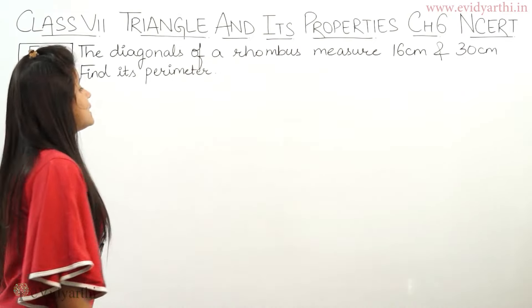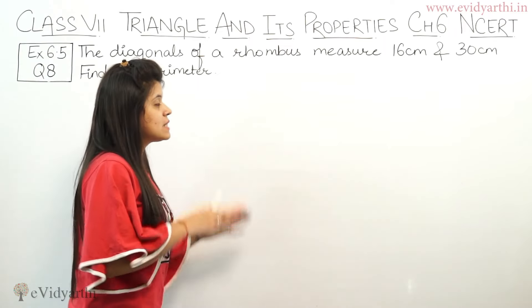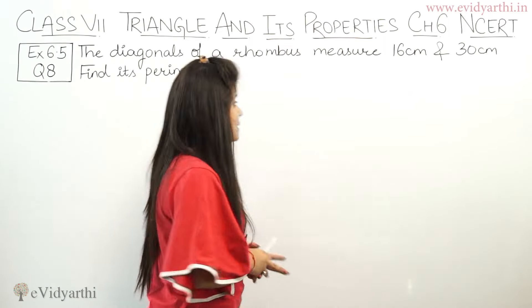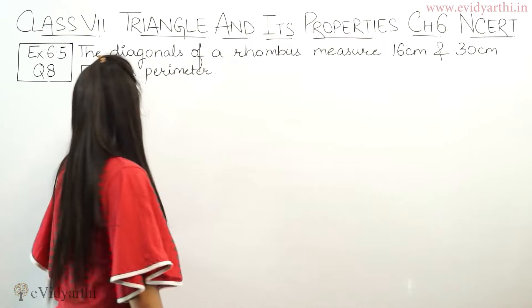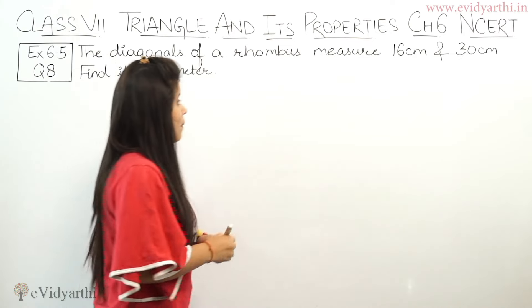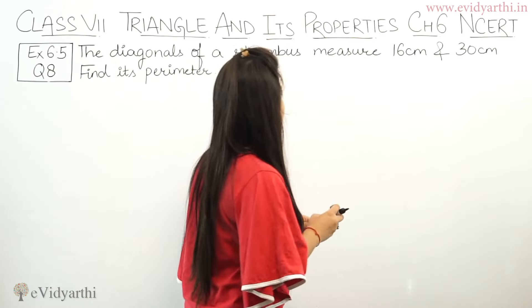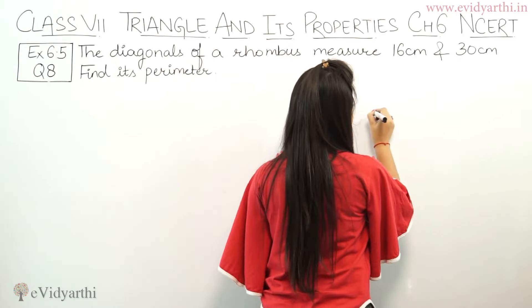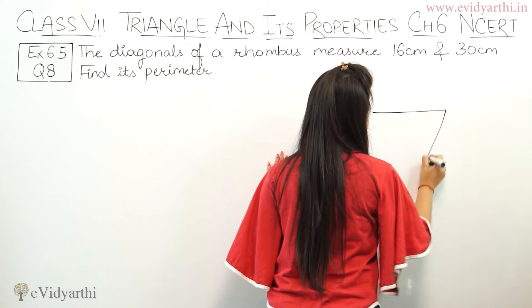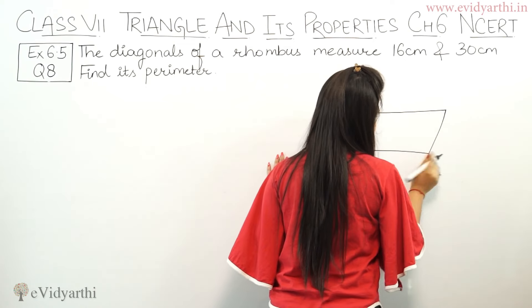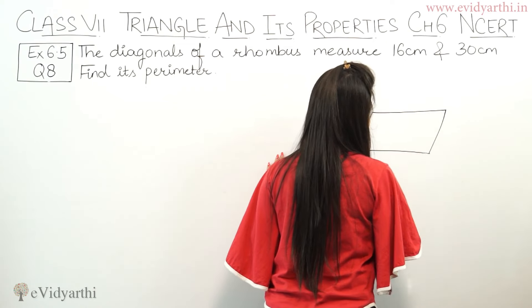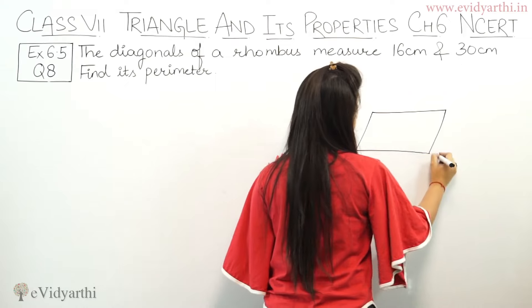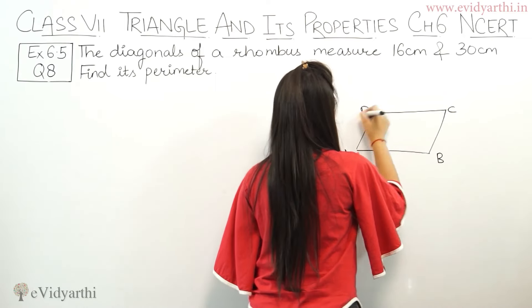The diagonals of a rhombus measure 16 cm and 30 cm — find its perimeter. Now let's draw a rhombus. Let's suppose this is a rhombus A, B, C, D.